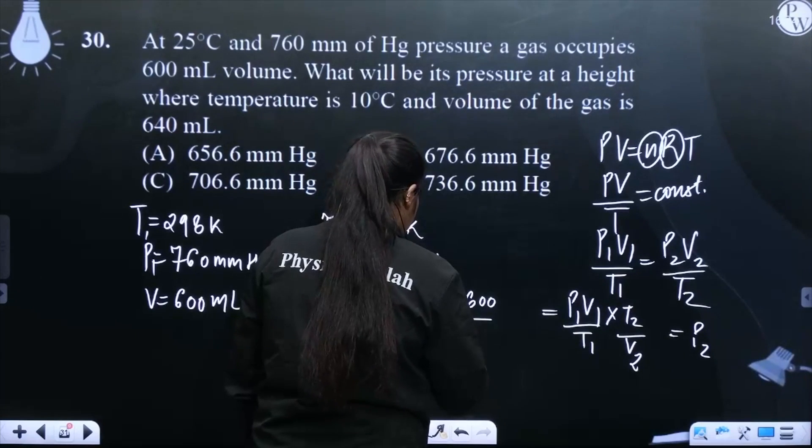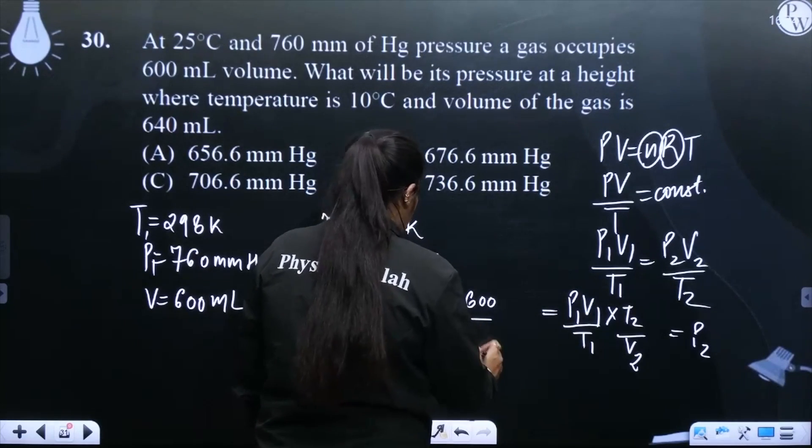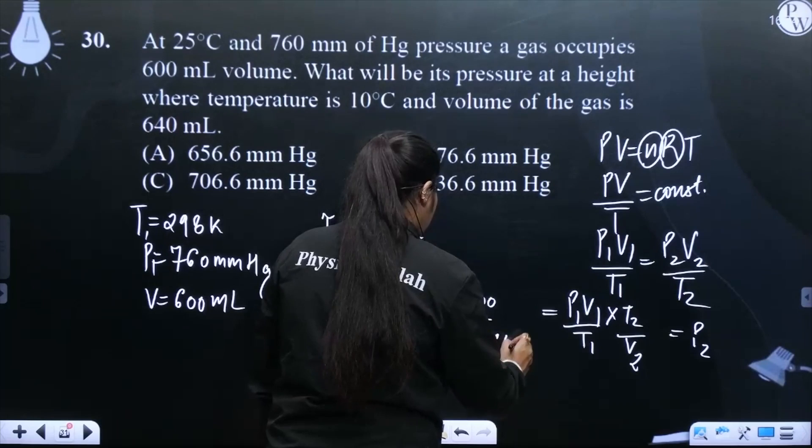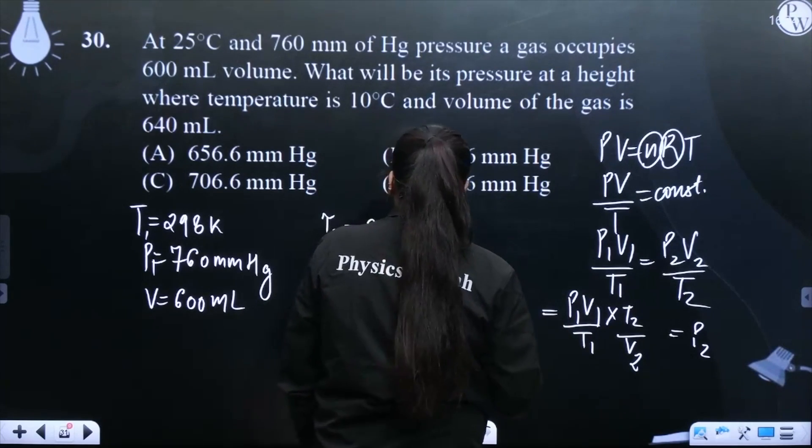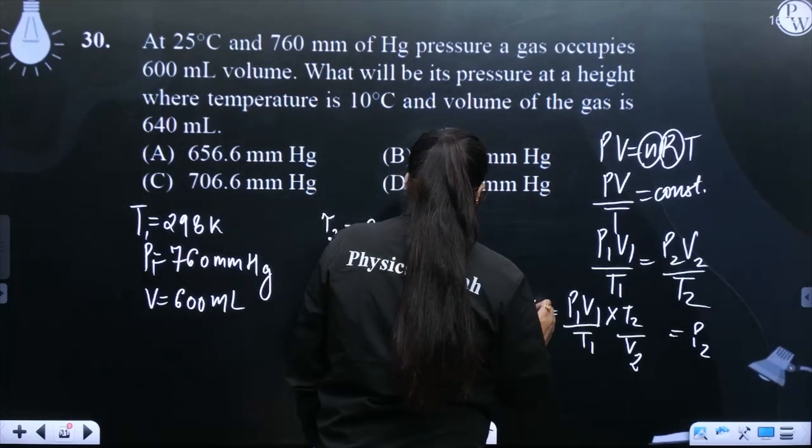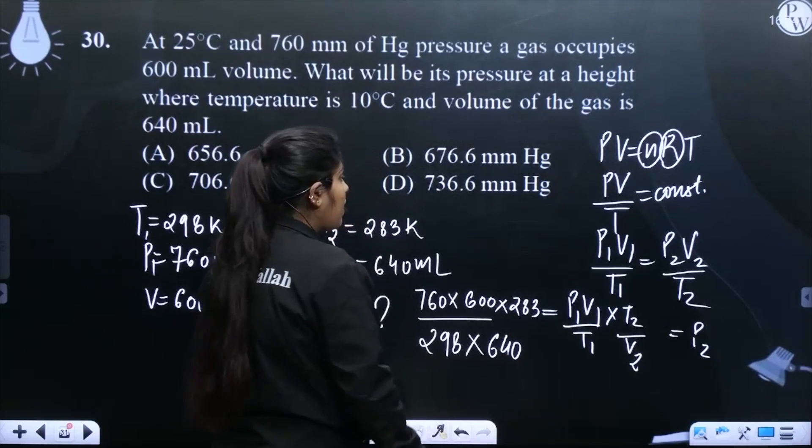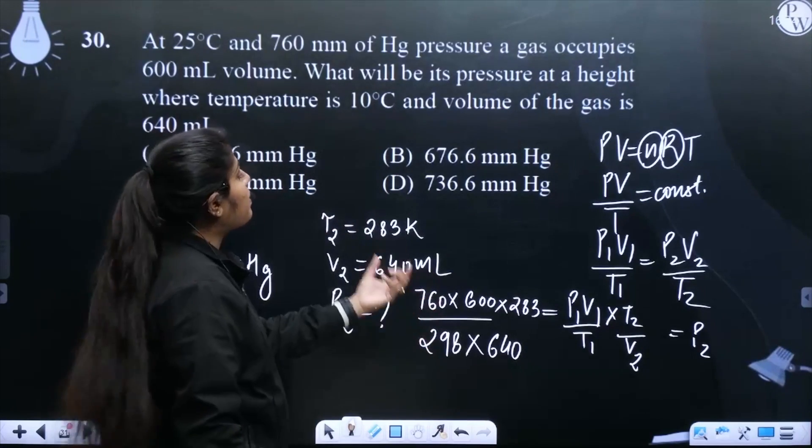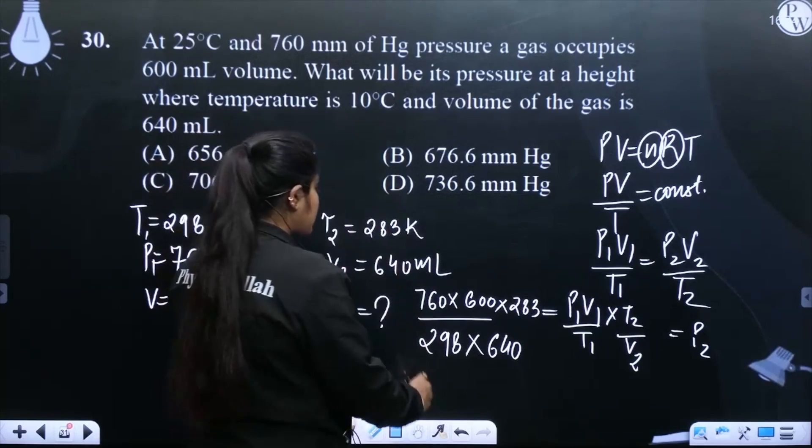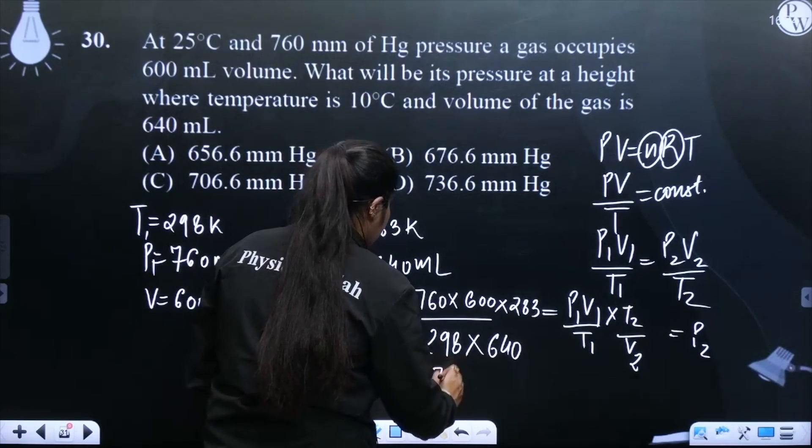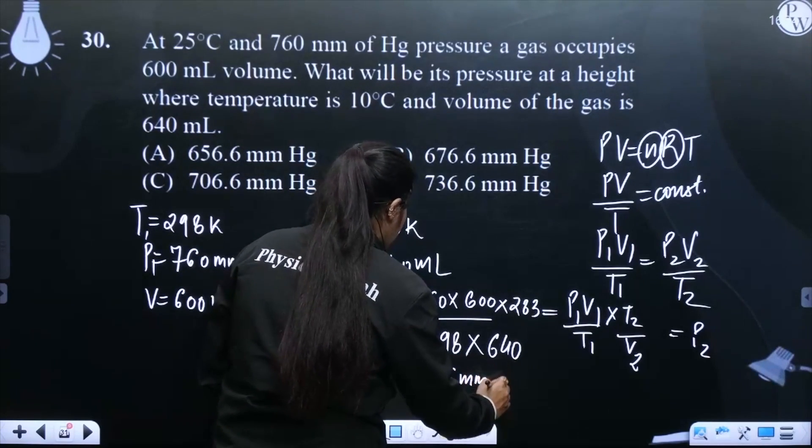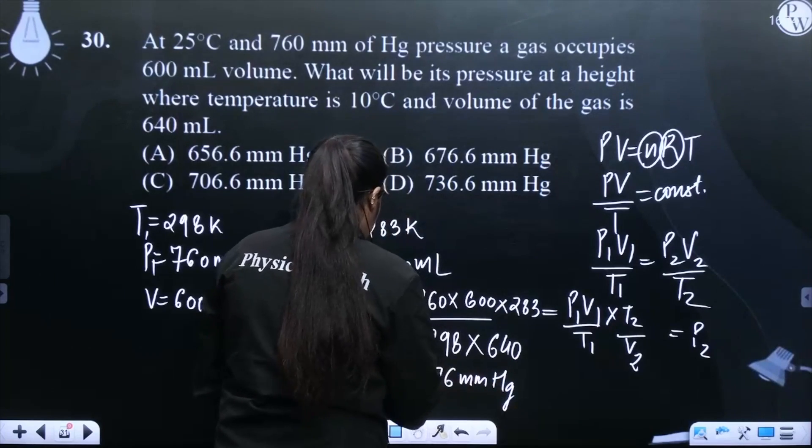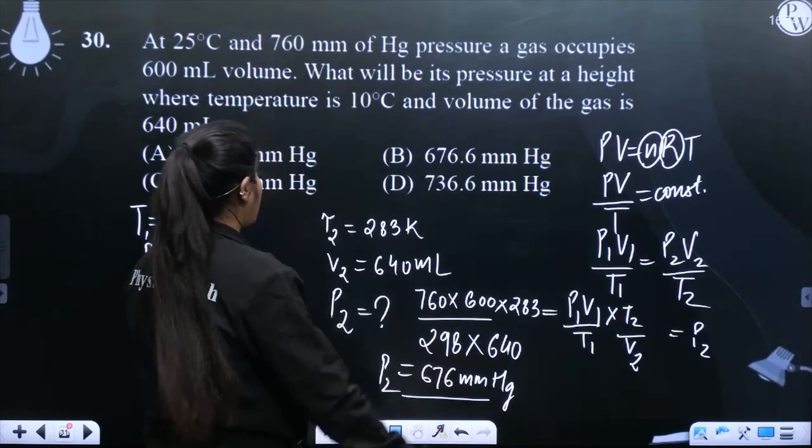Now we'll put in the values. P1 is given, P1 is given as 760. V1 is 600. V2 is 640. Now temperature is 283. This gives approximately 676.